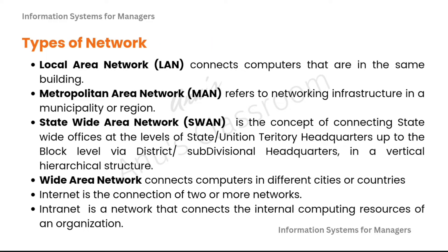There are many types of networks and most of these network types are classified based on how far apart the nodes of the network lie. A local area network or LAN connects computers that are in the same building, whereas a metropolitan area network or MAN refers to networking infrastructure in a particular municipality or region. Statewide area networks or SWANs connect statewide offices from state or union territory headquarters down to the block level via district or subdivisional headquarters in a vertical hierarchical structure. Wide area networks connect computers in different cities or countries.